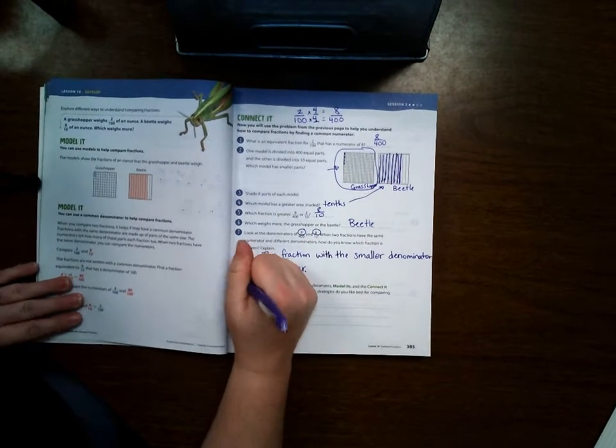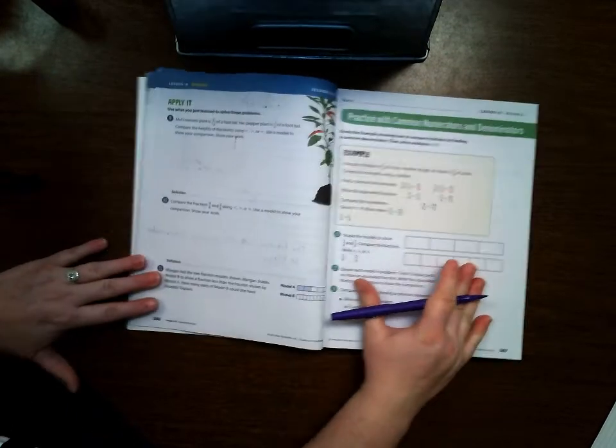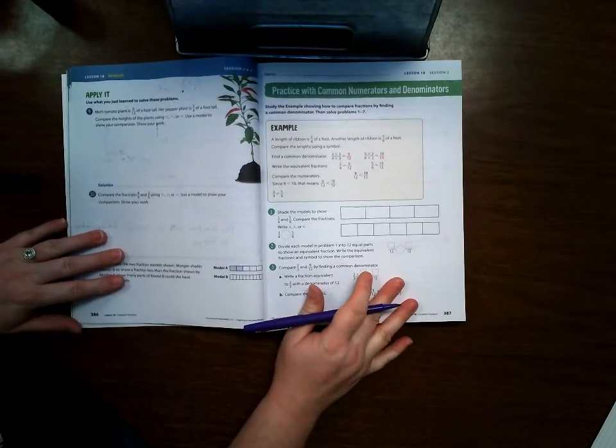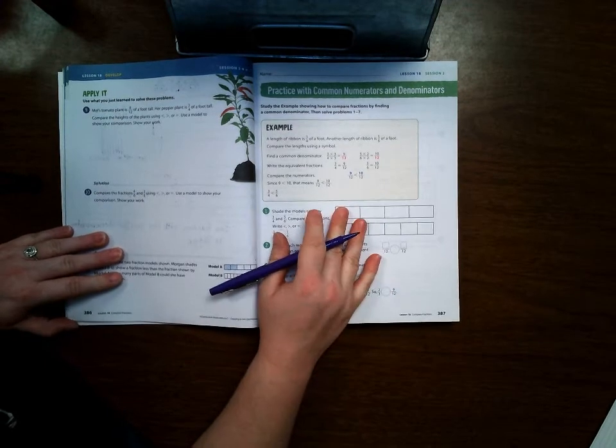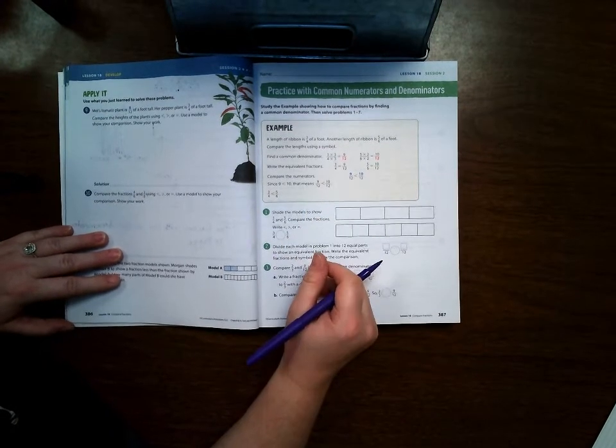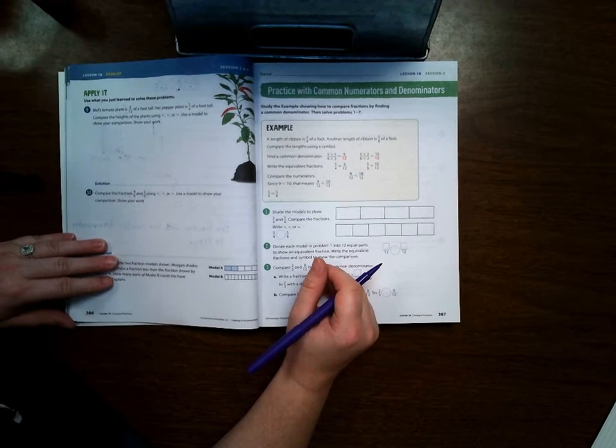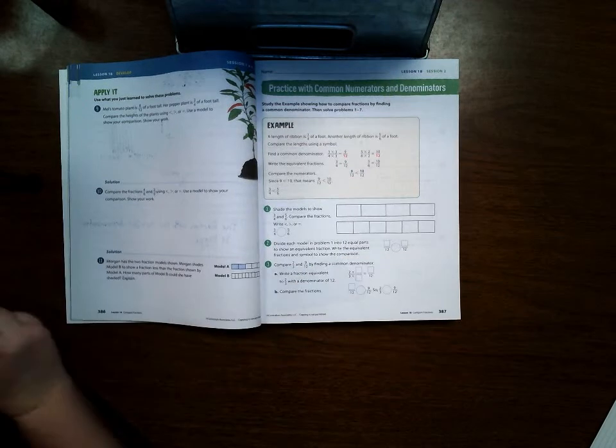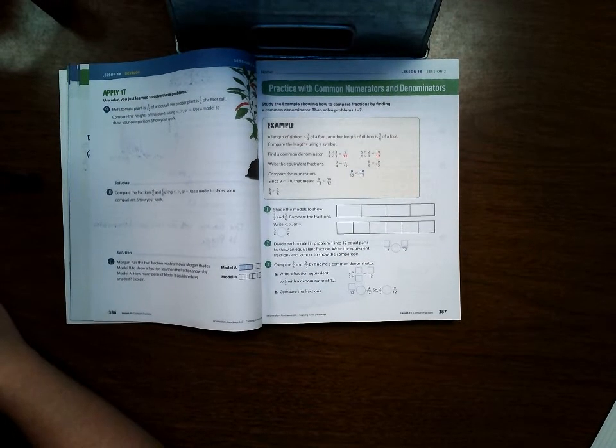And you can skip number 8. Okay let's go ahead and go to page 386. We're actually going to skip 386 and go straight to 387. On 387 and 388 you're going to be practicing making common denominators and comparing fractions. So go ahead and try this on your own first and see how you do, and then come back and finish this video to check your answers.